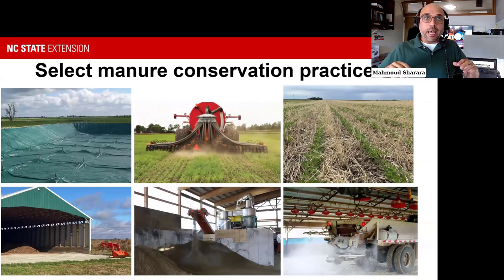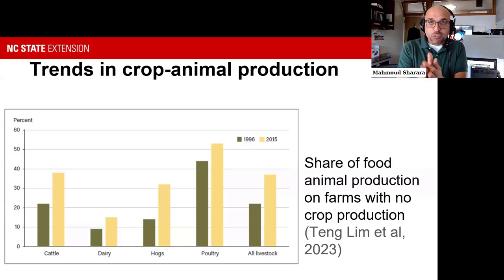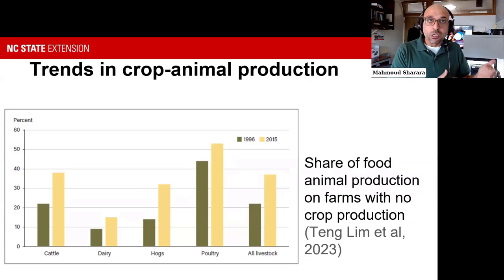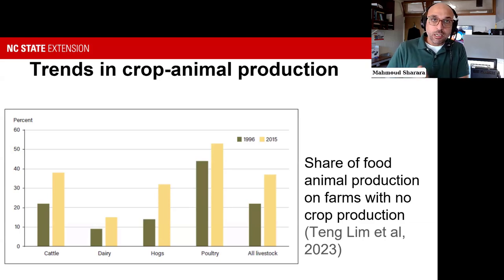As we step outside and look at crop and animal production on a larger, national scale, we start to see some trends playing out. This data is slightly out of date—the most recent data here is 2015—but it illustrates the point. The vertical axis shows the percentage of animal operations that do not have cropping happening on the same farm, and the horizontal axis shows what type of animals and what the trend looked like between 1996 and 2015.